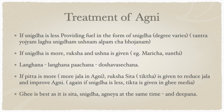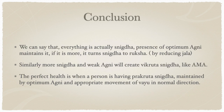Ghee is the best as it is shita, snigtha, and agni-deepana at the same time. Cow's ghee — go-ghrita — is the best to improve nourishment to ojas. We can say that everything is actually snigtha, and the presence of optimum agni maintains it. If agni is more, it turns snigtha to ruksha by reducing jala. More snigtha with weak agni creates vikrita snigtha like ama. Perfect health is when a person has kratva snigtha maintained by optimum agni and appropriate movement of vayu in the normal direction.